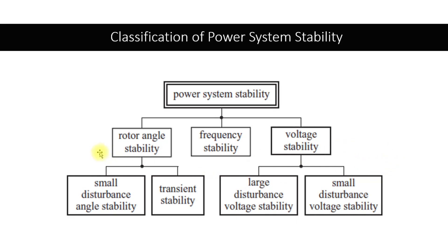Rotor angle stability is further divided into small disturbance angle stability and transient stability. By transient, we mean that it is going to have a huge excursion in the angle — the power angle or the generator angle. This change in delta will be known as transient stability.